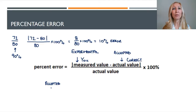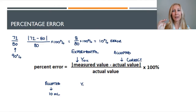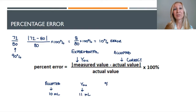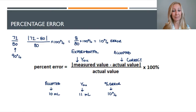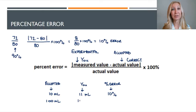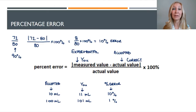Let's look at a more relative situation. Say you're measuring the volume of water in a beaker and the accepted value is 10 milliliters, but you measured it at 11 milliliters. If we do our percent error calculation, you're off by 10% — even though you were only off by 1 milliliter, it was still a 10% error because you were only supposed to get 10 to begin with. But if you're measuring 100 milliliters and you're off by 1 milliliter, getting 101 milliliters, that amounts to only a 1% error because you're starting with a greater amount.